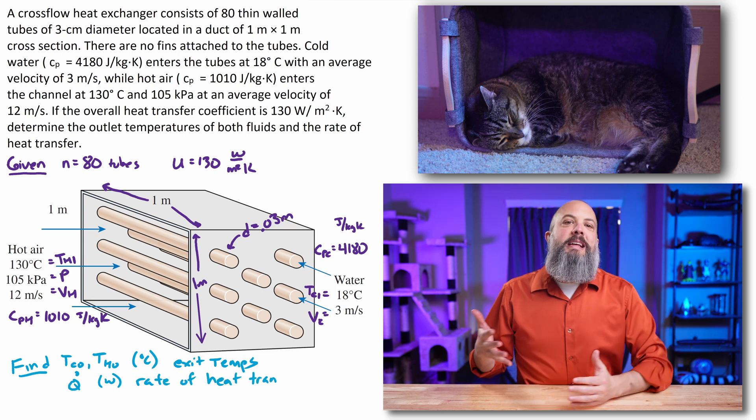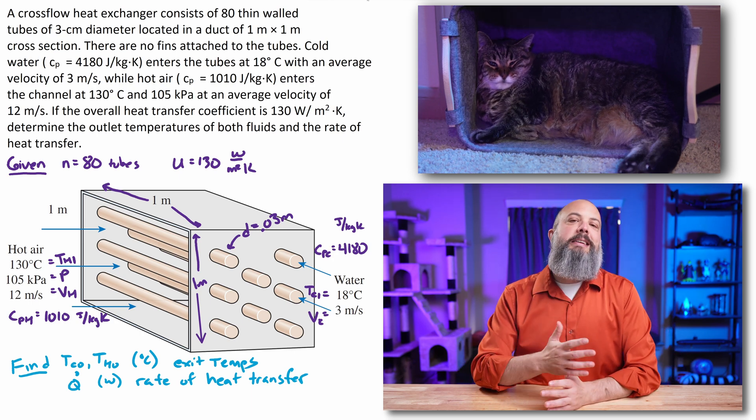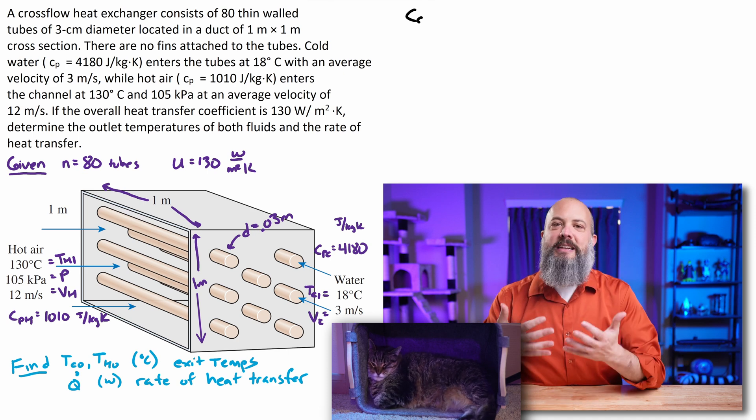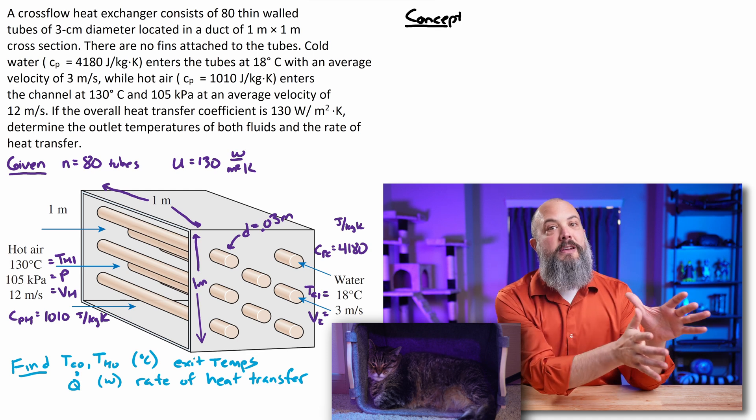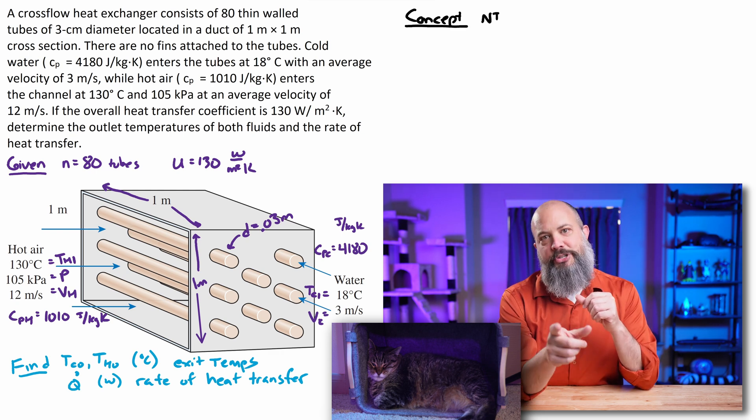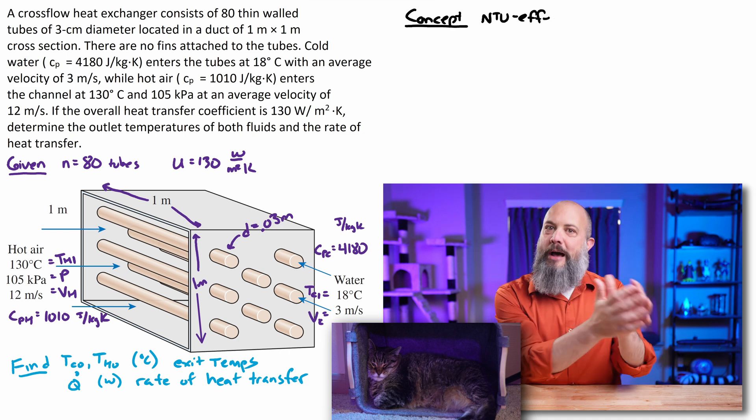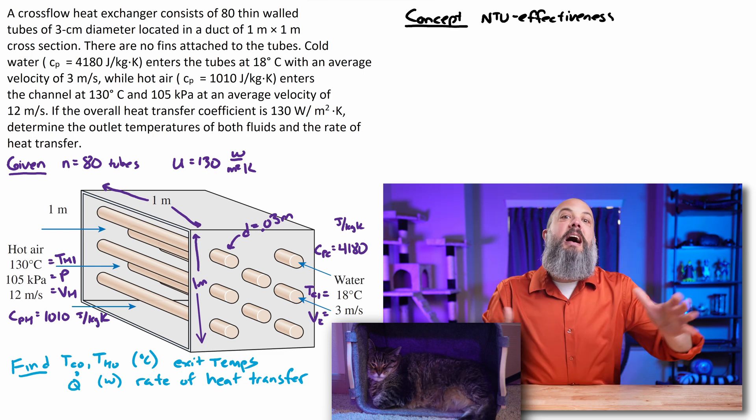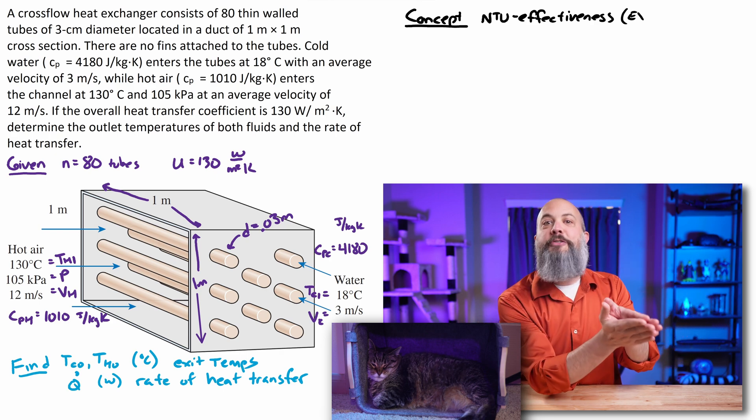Now we're trying to find for this problem the outlet temperatures and the rate of heat transfer q dot. So since we're looking for outlet temperatures, that's how I know that this is an effectiveness NTU method problem. Because LMTD, the easier method for heat exchangers, that can only be used when you know at least one outlet temperature. LMTD is useful when you know outlet temperatures, like what outlet temperature you want to hit. And therefore you can solve for the size or the dimensions of your heat exchanger to get the exit temperature that you want or know.